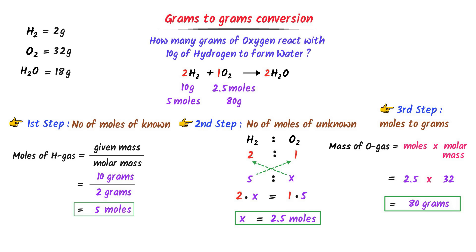In such problems, remember these 3 steps: firstly, convert given mass to number of moles; secondly, convert number of moles to number of moles of the unknown species; thirdly, convert number of moles to grams. I hope that you have learned all about basic stoichiometry.